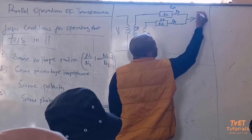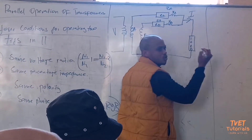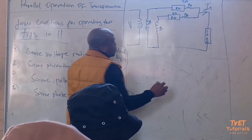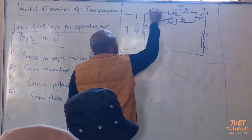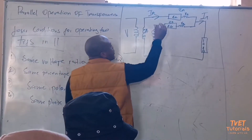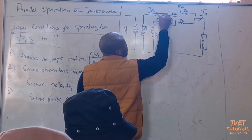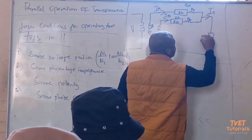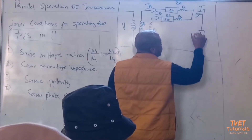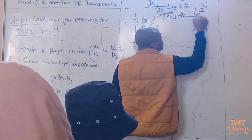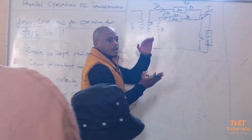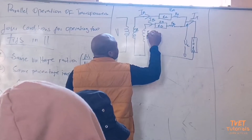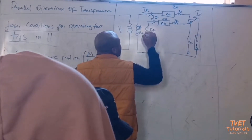This load will draw a total current IT. I will have a current from transformer A, which I'll call IA, and another current from transformer B, called IB. The voltage on the load side will be referred to as V2, which is the voltage on the load side of the parallel combination of our transformers.